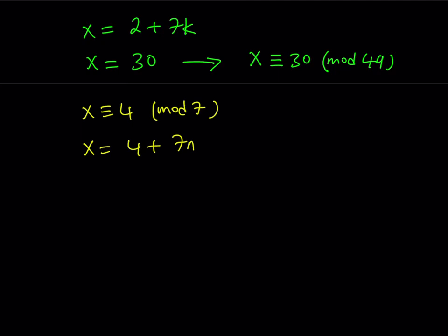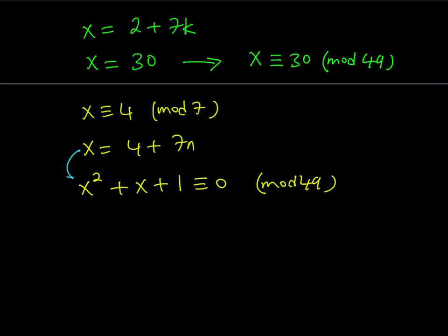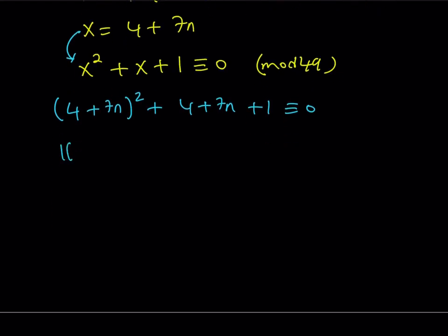Now, I'd like to substitute this into my original congruence. So let me rewrite it: x² + x + 1 ≡ 0 (mod 49), and I would like to replace x with this expression here. Let's go ahead and replace x with (4 + 7n)² + (4 + 7n) + 1 ≡ 0. Now, remember that this is a congruence mod 49.